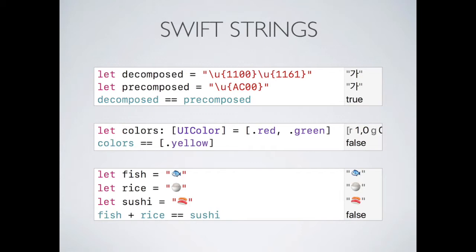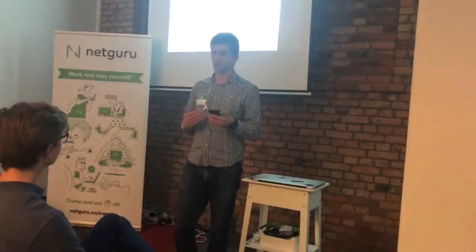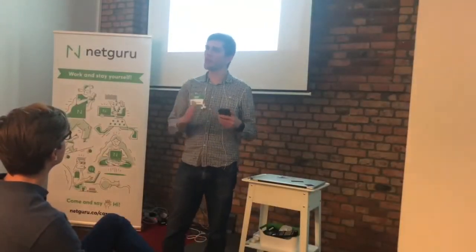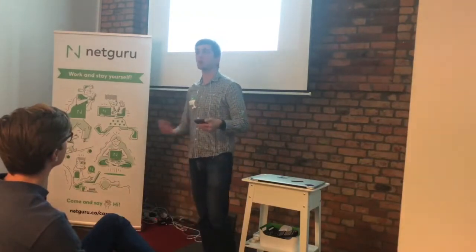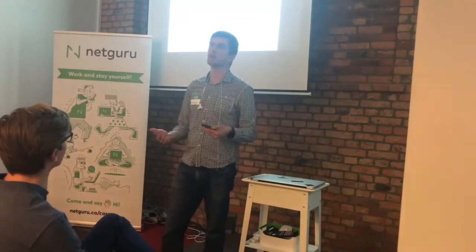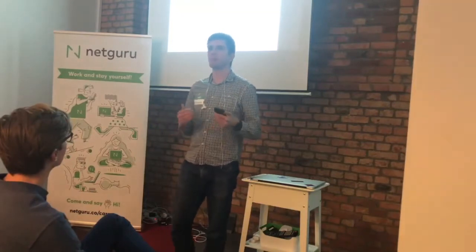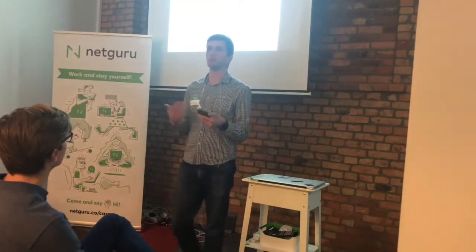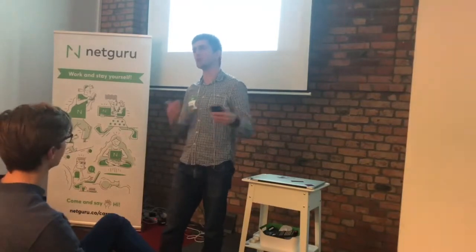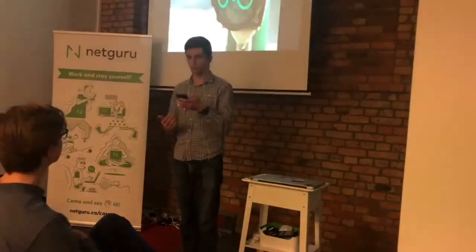That's sort of like getting an array of UI colors — one red and one green — and assuming they make yellow because that's what colors do. But we can't treat strings like that. You can't get fish and rice and say it's equal to sushi. In Swift 2 and 3, strings weren't collections, and that was technically correct. But Swift 4 made strings a collection and is much easier to use, which is why the community moved to that approach.